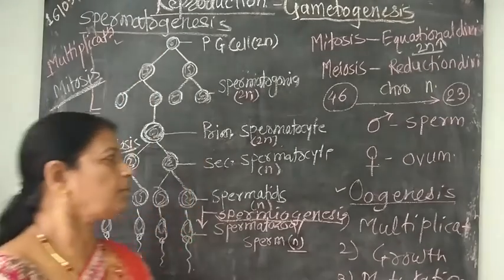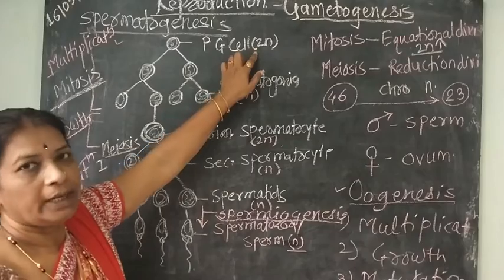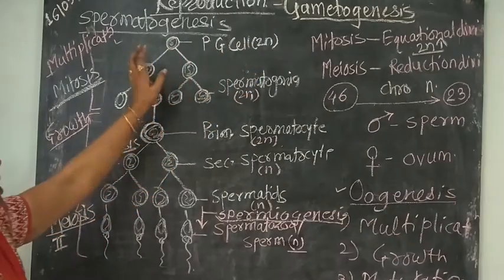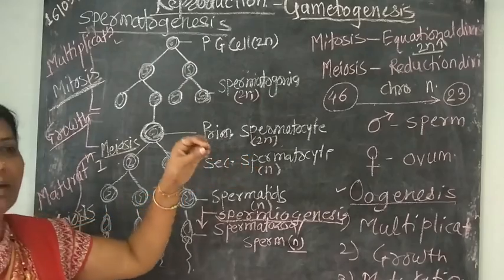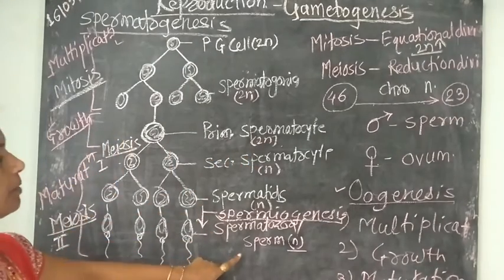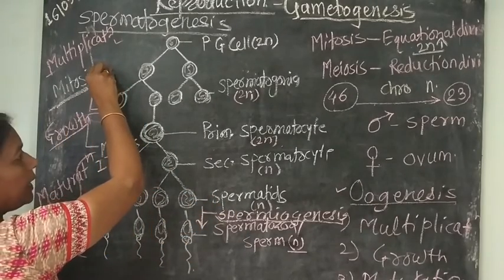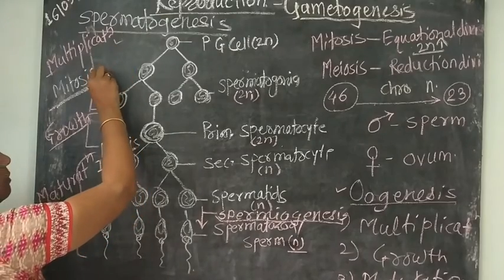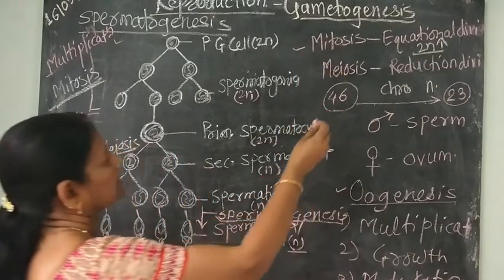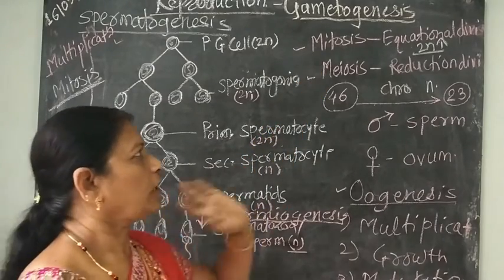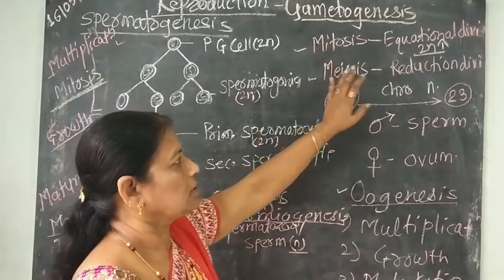Spermatogenesis is a process in which the sperms are formed. These sperms are formed from a diploid cell, the diploid cell present in the seminiferous tubule. That seminiferous tubule has cells which undergo different changes, and thus the sperms are formed. During this process we study two stages: the phases of cell division — first one is mitosis and second one is meiosis.